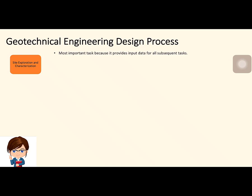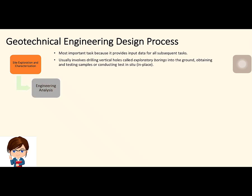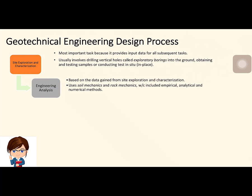Site exploration usually involves drilling vertical holes called exploratory borings into the ground, obtaining and testing samples, or conducting tests in situ — that is, in place, in the actual situation of our soil. The next process is engineering analysis, which is based on the data gained from site exploration and characterization.